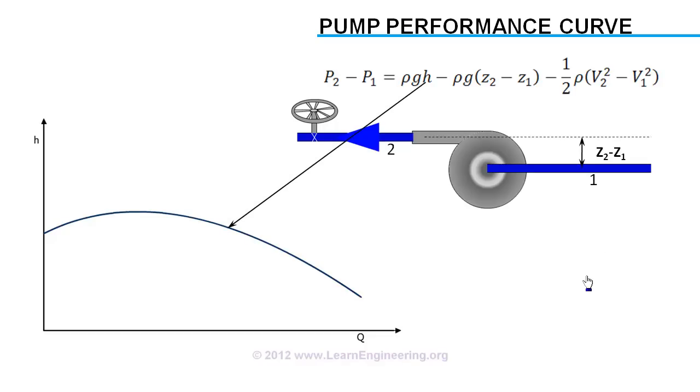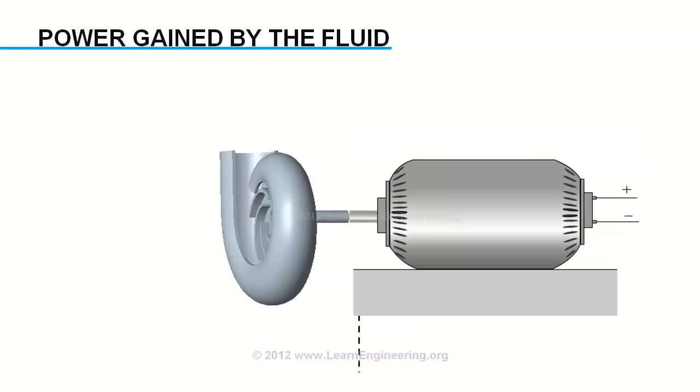Now, we will see how much power fluid is gaining from pump power input, or shaft power. Power gained by the fluid will be lower than the power supplied. One main factor is hydraulic loss, as we discussed. Other factors are volumetric loss and mechanical loss.